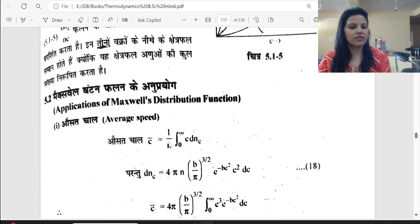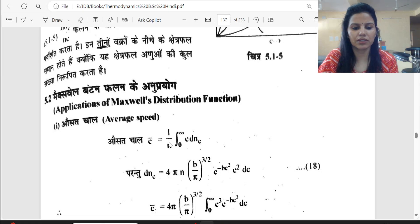Next topic is applications of Maxwell distribution function, which is the first average speed. If we take the average speed using the general formula, what do we do? If I tell you that 5 particles have energy E1 and 6 particles have energy E2, then take the average. So you multiply 5 with E1, 6 with E2, then add 5 plus 6.